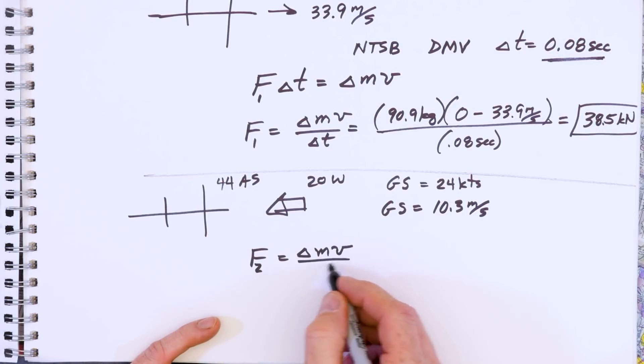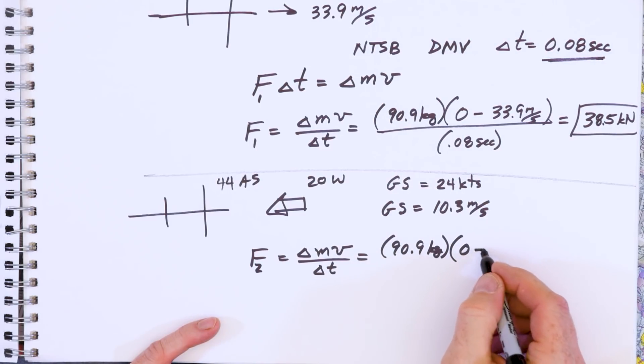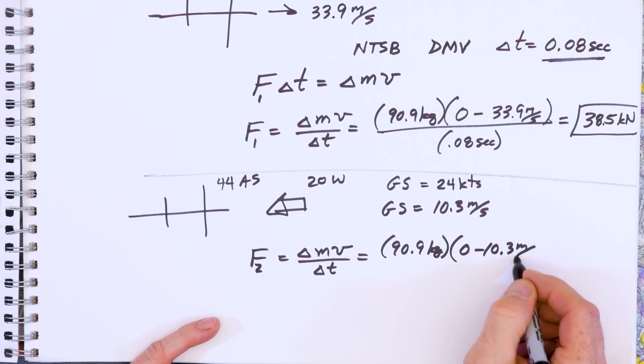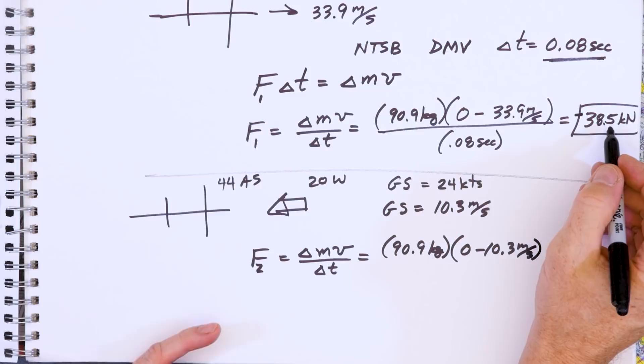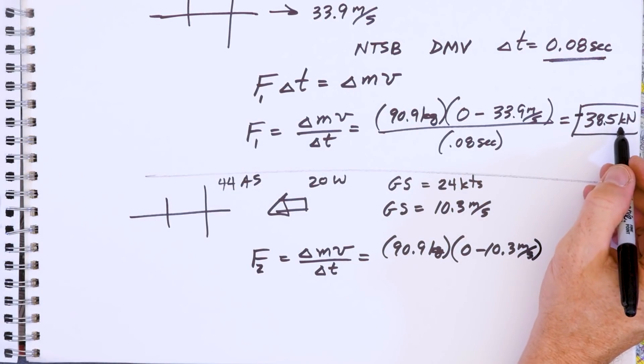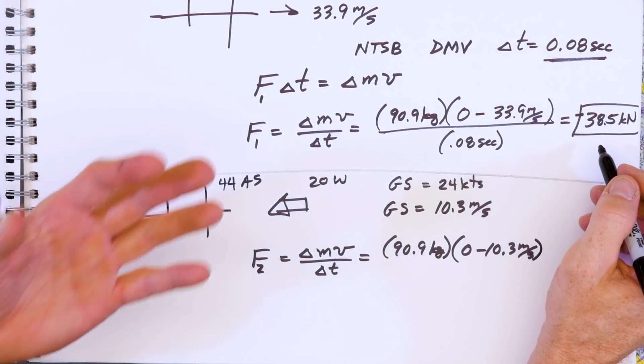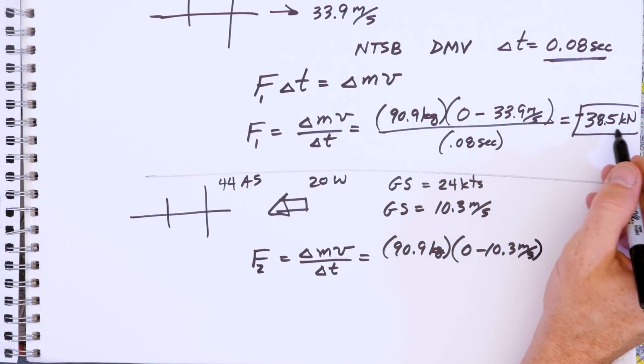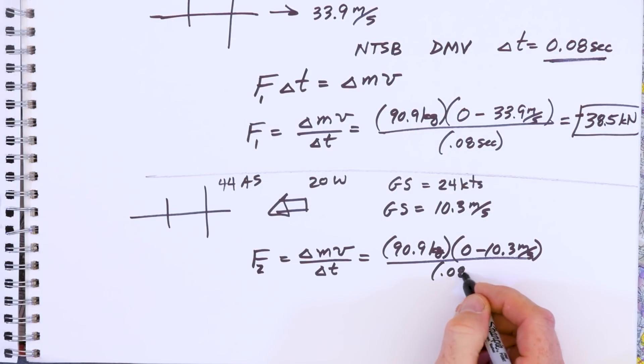So we have 90.9 kilograms, zero minus 10.3 meters per second. This would be a negative number because it's forces in the opposite direction. You're getting thrust forward, but then there's a force in the other direction on you, force of your body on the glass or the glass on your body, depending which way you define as positive and negative. That's fine. Those are details. We want the main concept here. 0.08 seconds.